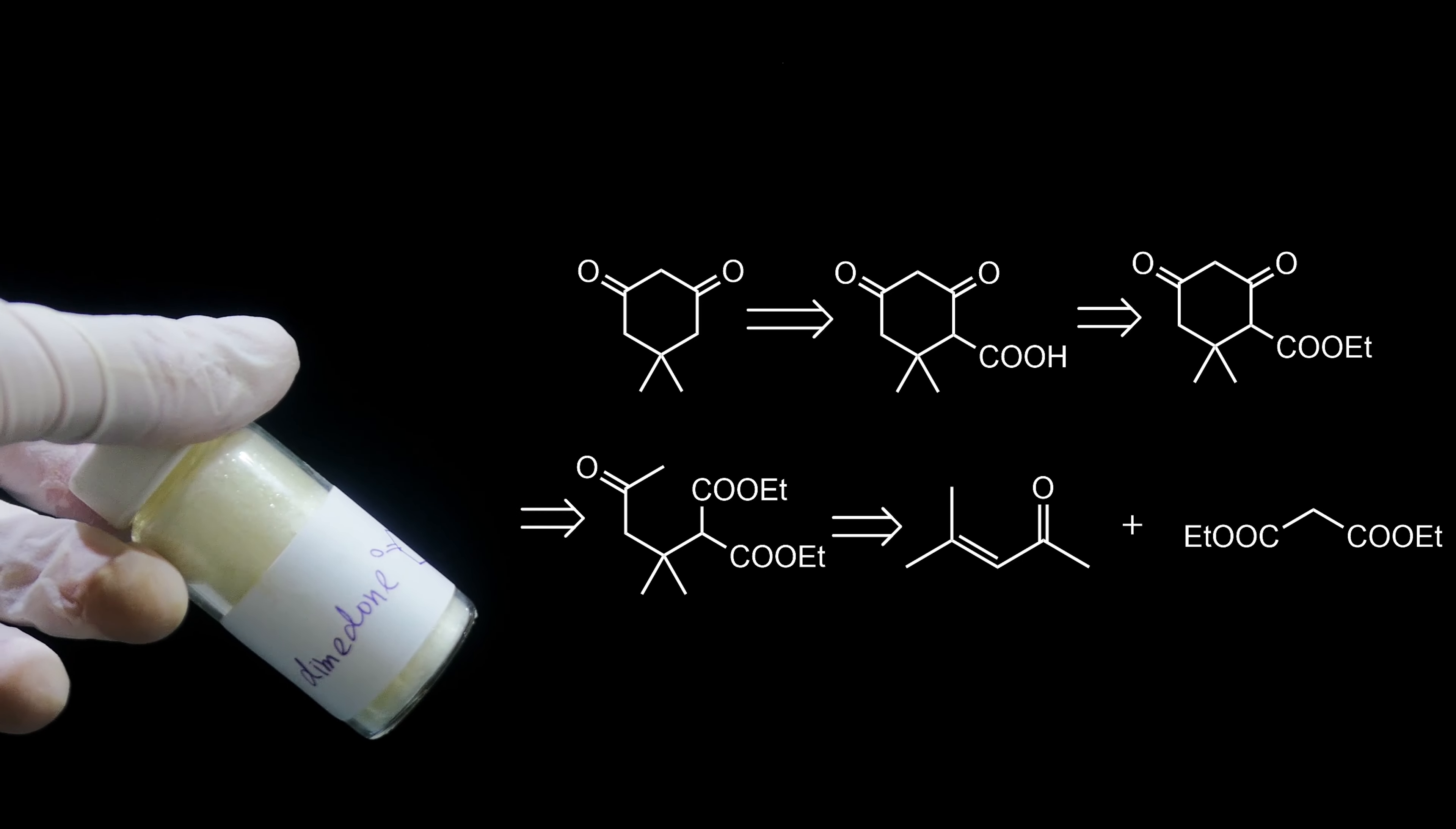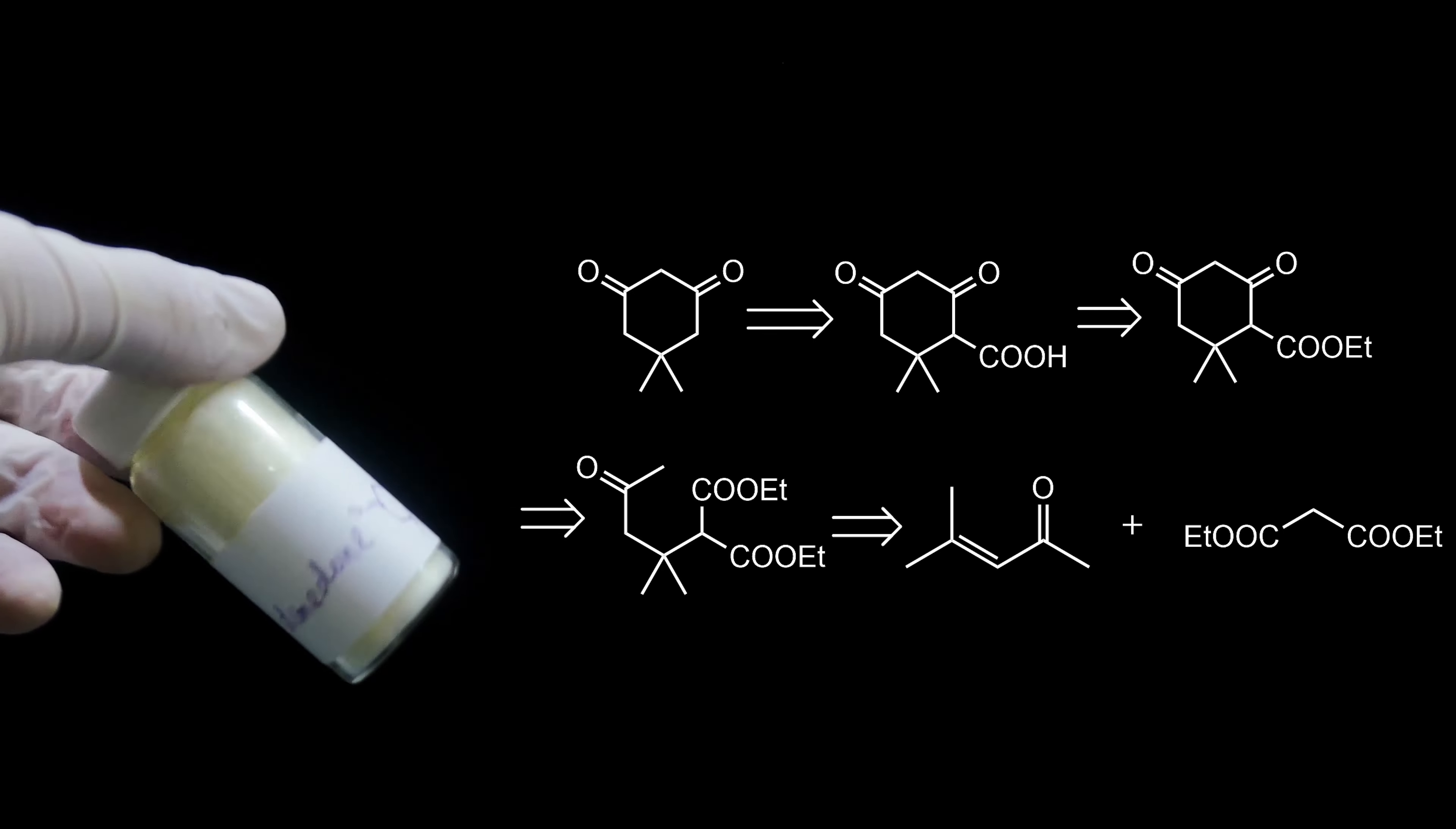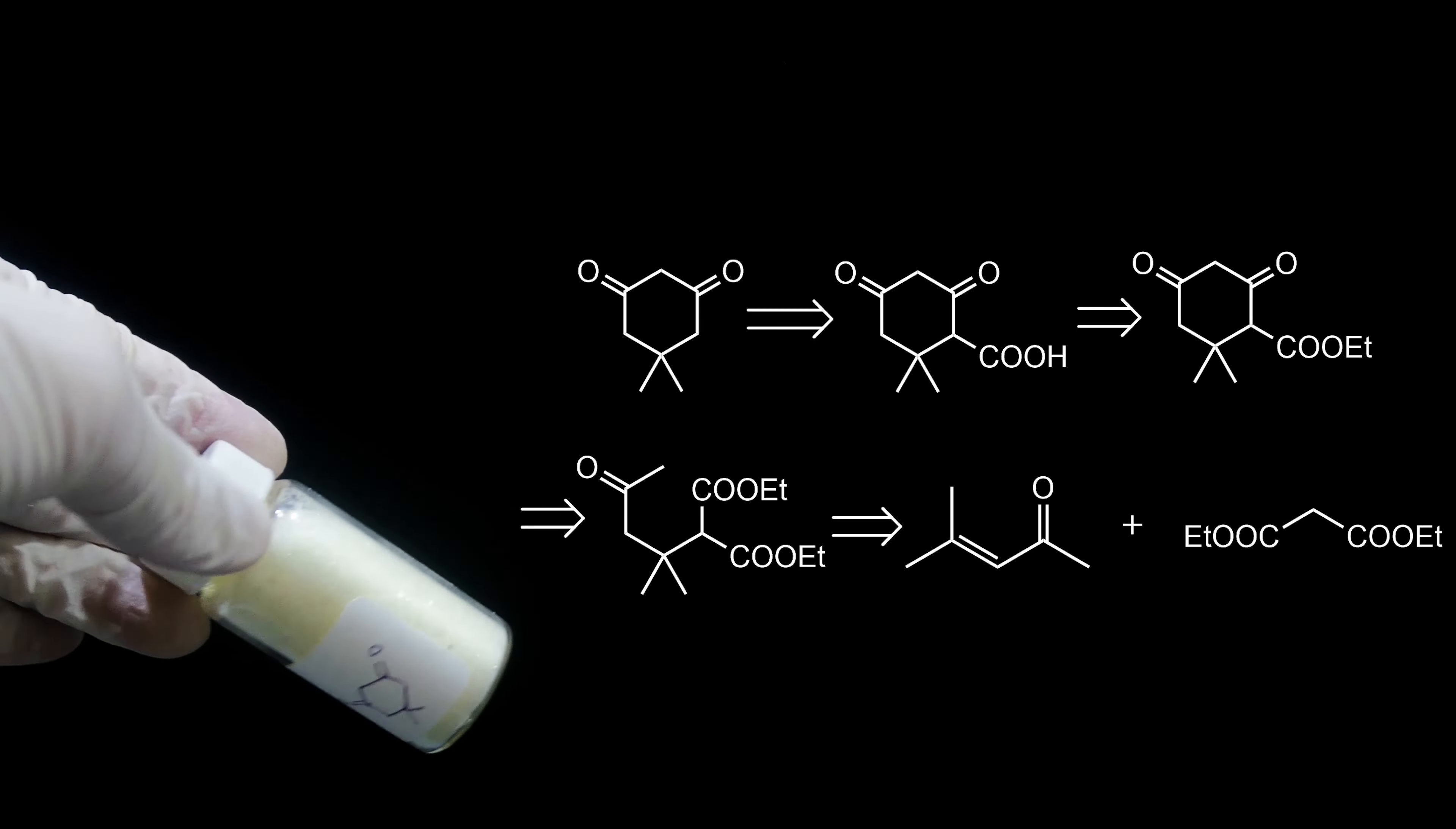Then we notice the one-fold relation between the diester group and ketone, so we use the Michael addition to disconnect this. And these are the starting materials: mesityl oxide and diethyl malonate.